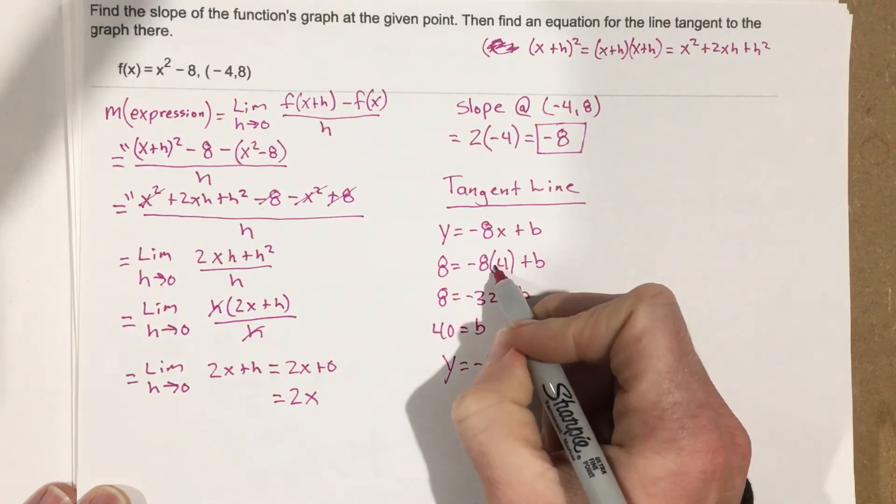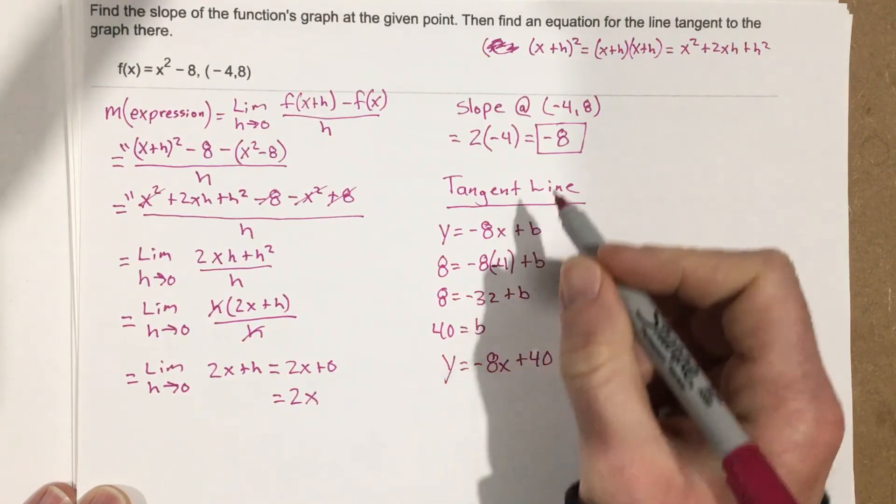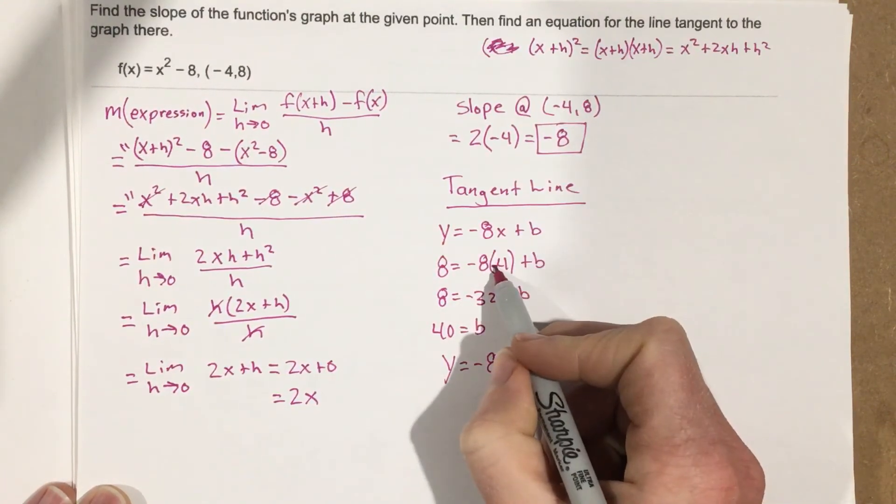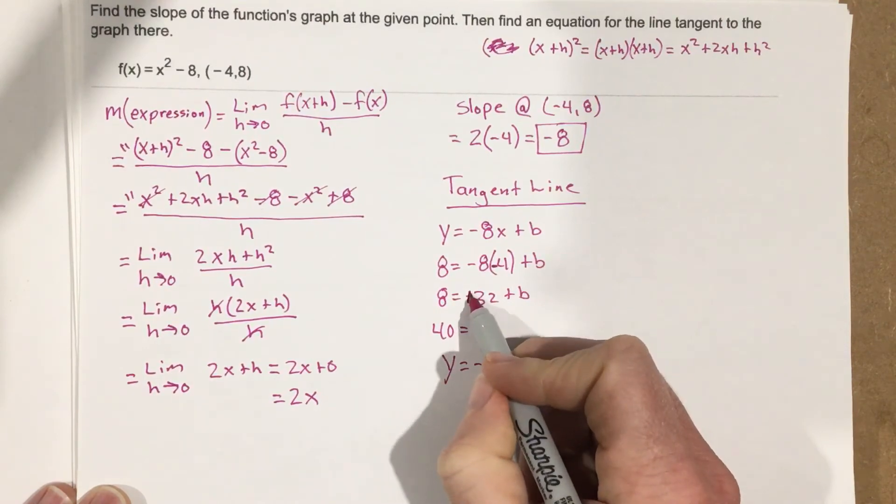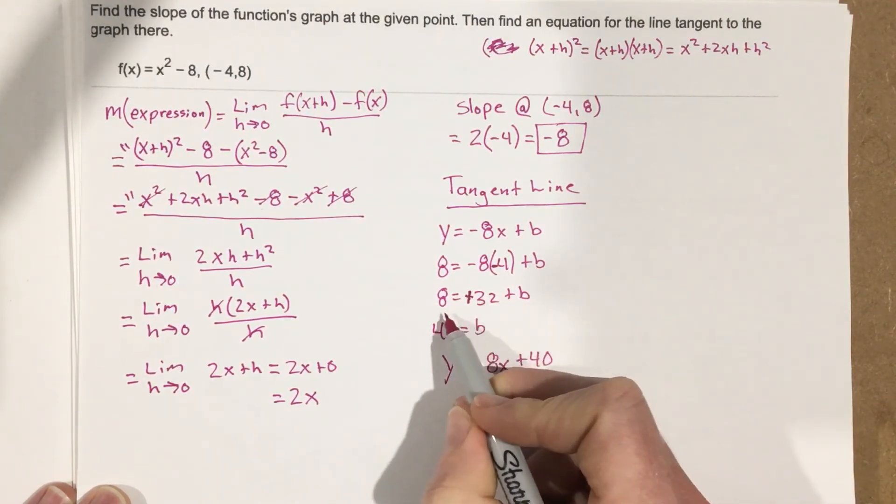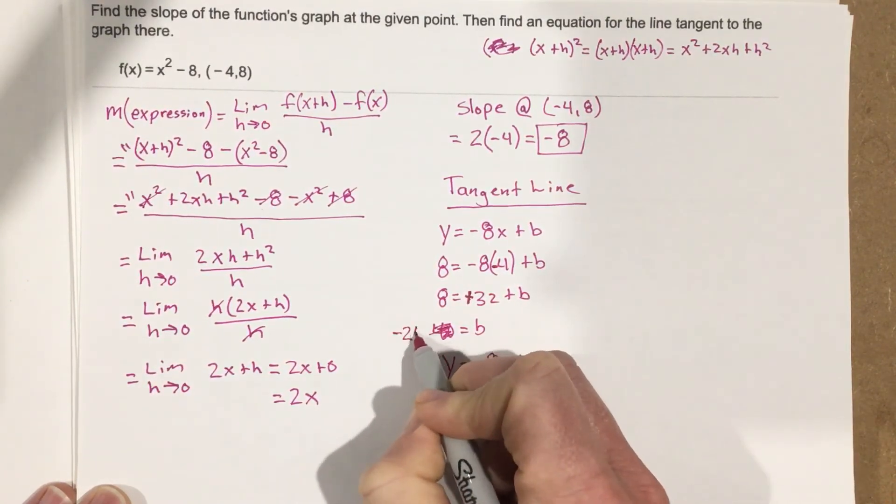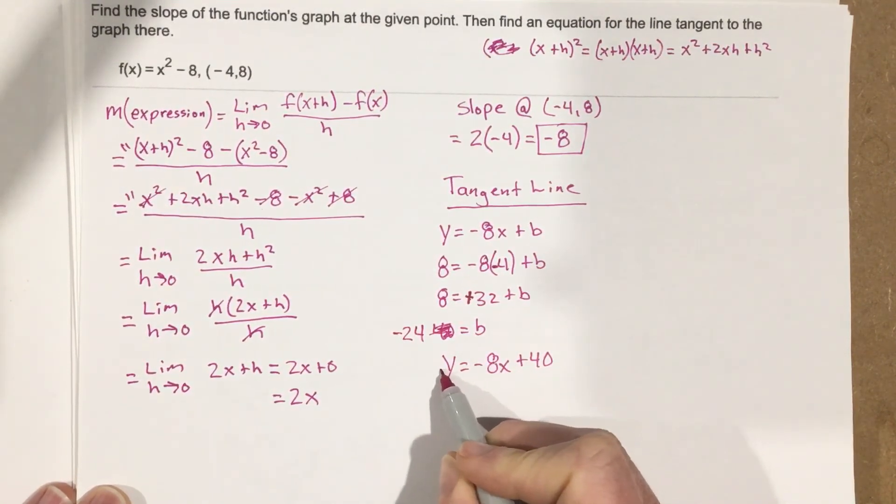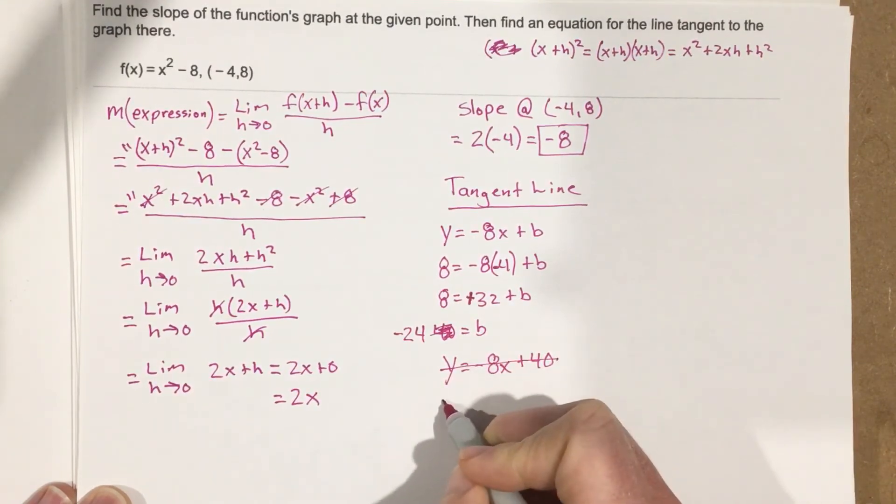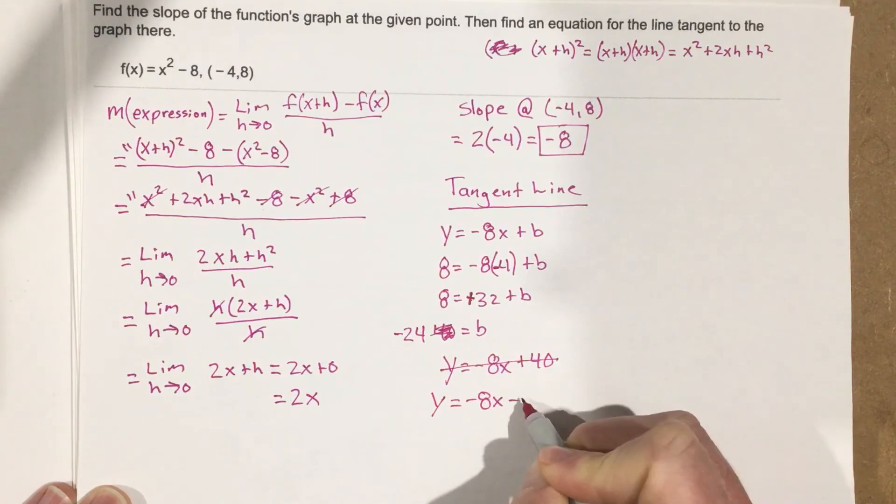Oh, you know what I screwed up. I meant to put this as -4, whoops. This is -4 here, I made a little mistake. This should be +32, so when I subtract that over, that should be -24. So I'm going to cross this out, and this is actually y = -8x - 24.